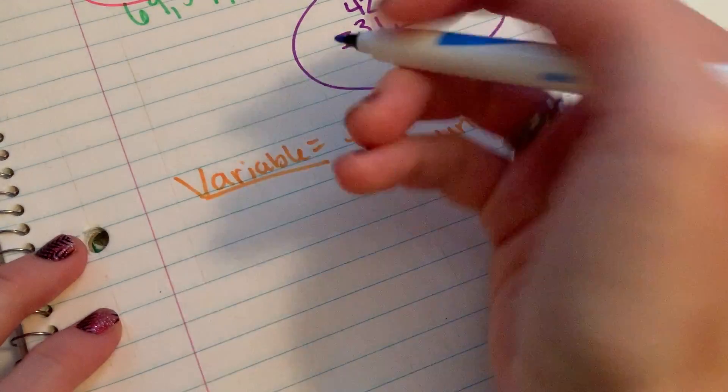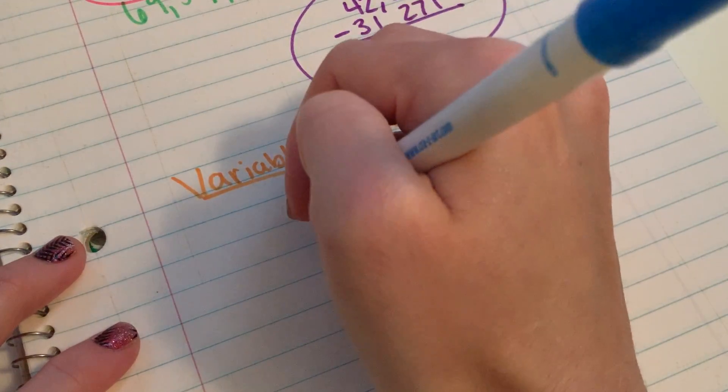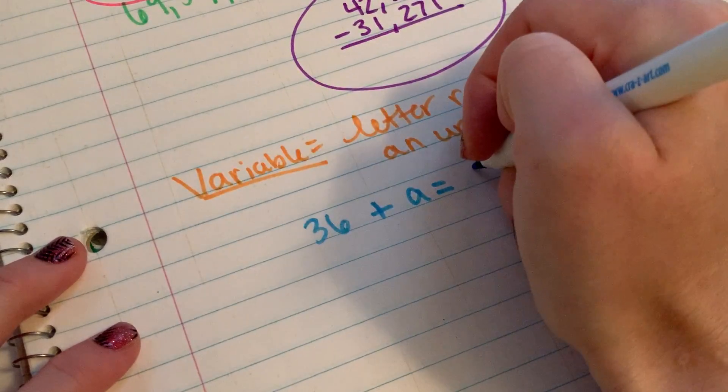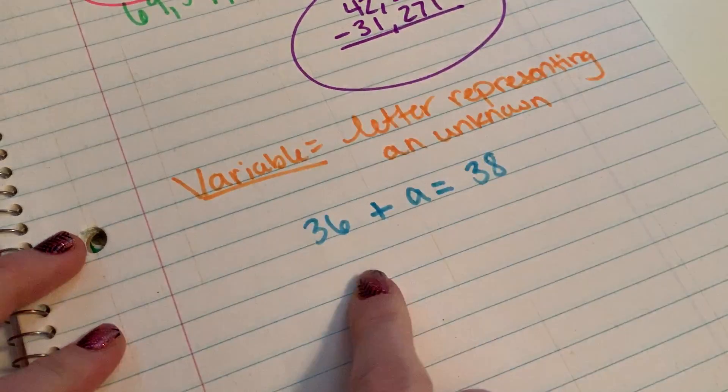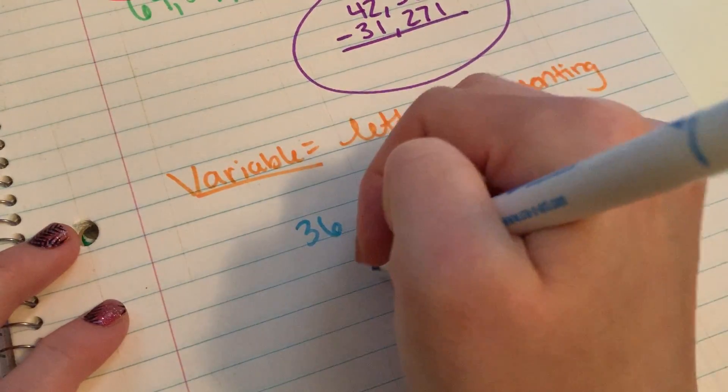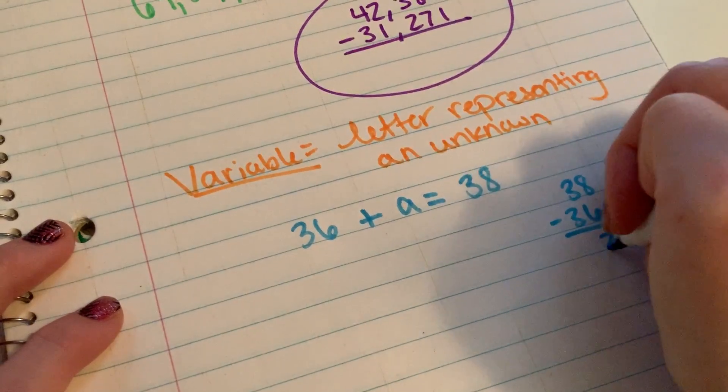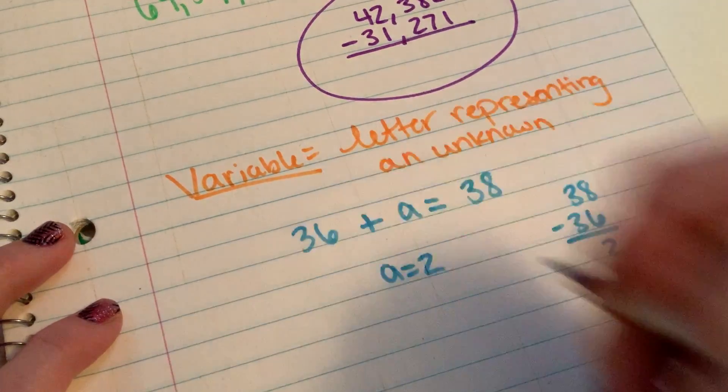So you're going to see variables in a lot of the problems on Zurn, and a lot of them are based with word problems. So here's what you're going to see. For example, you'll see 36 plus A equals 38. What is A? Well, we can do 38 take away 36, gives us 2. So A equals 2.